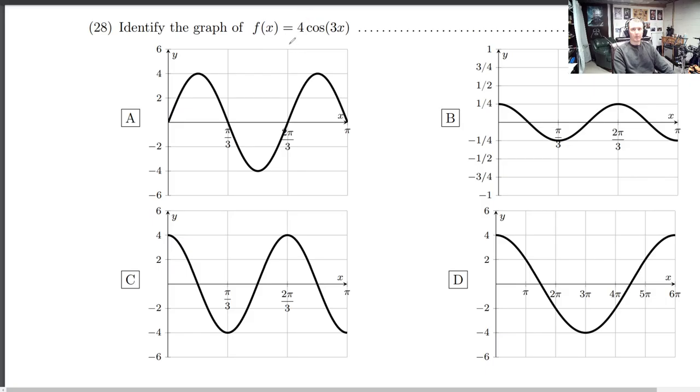the amplitude is the absolute value of this 4, which is 4. So it's not b. b has an amplitude of 1 fourth. It's too short.